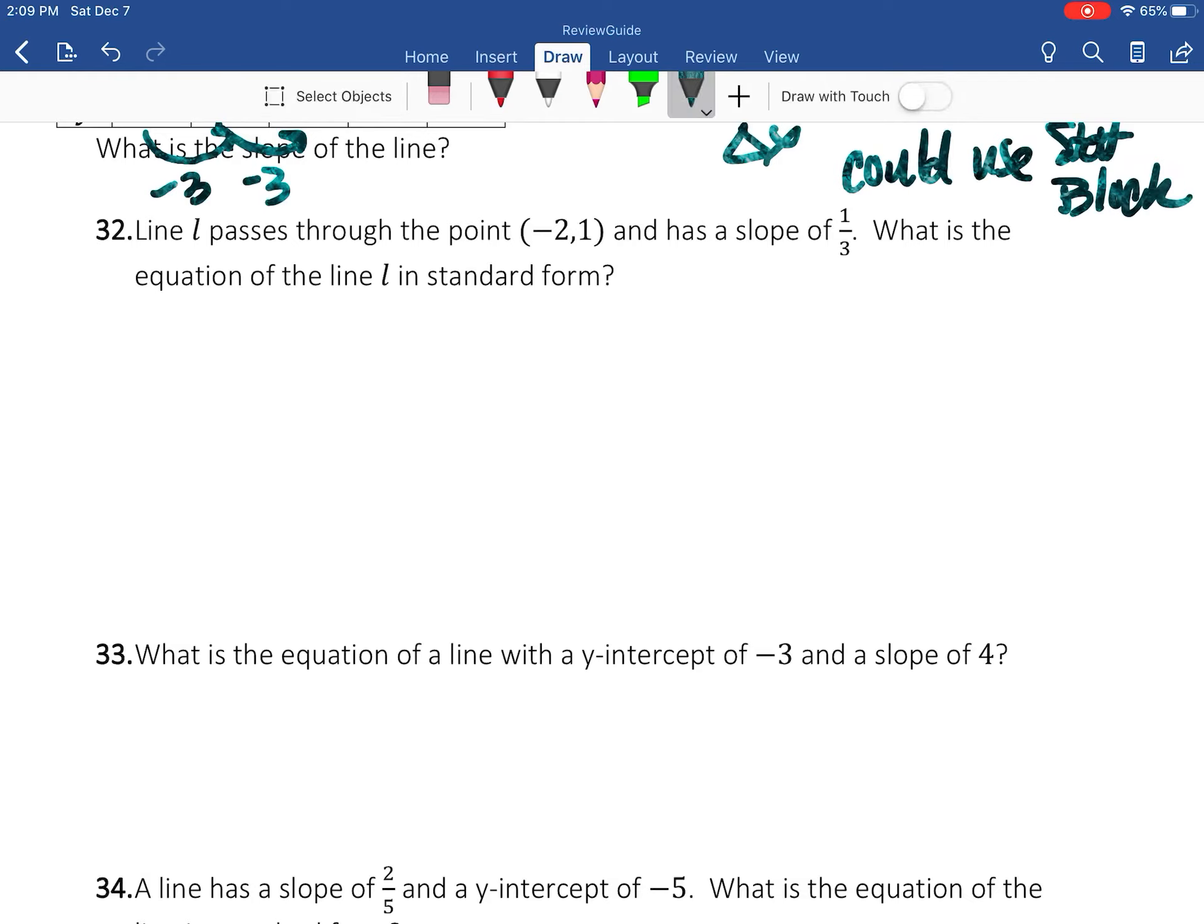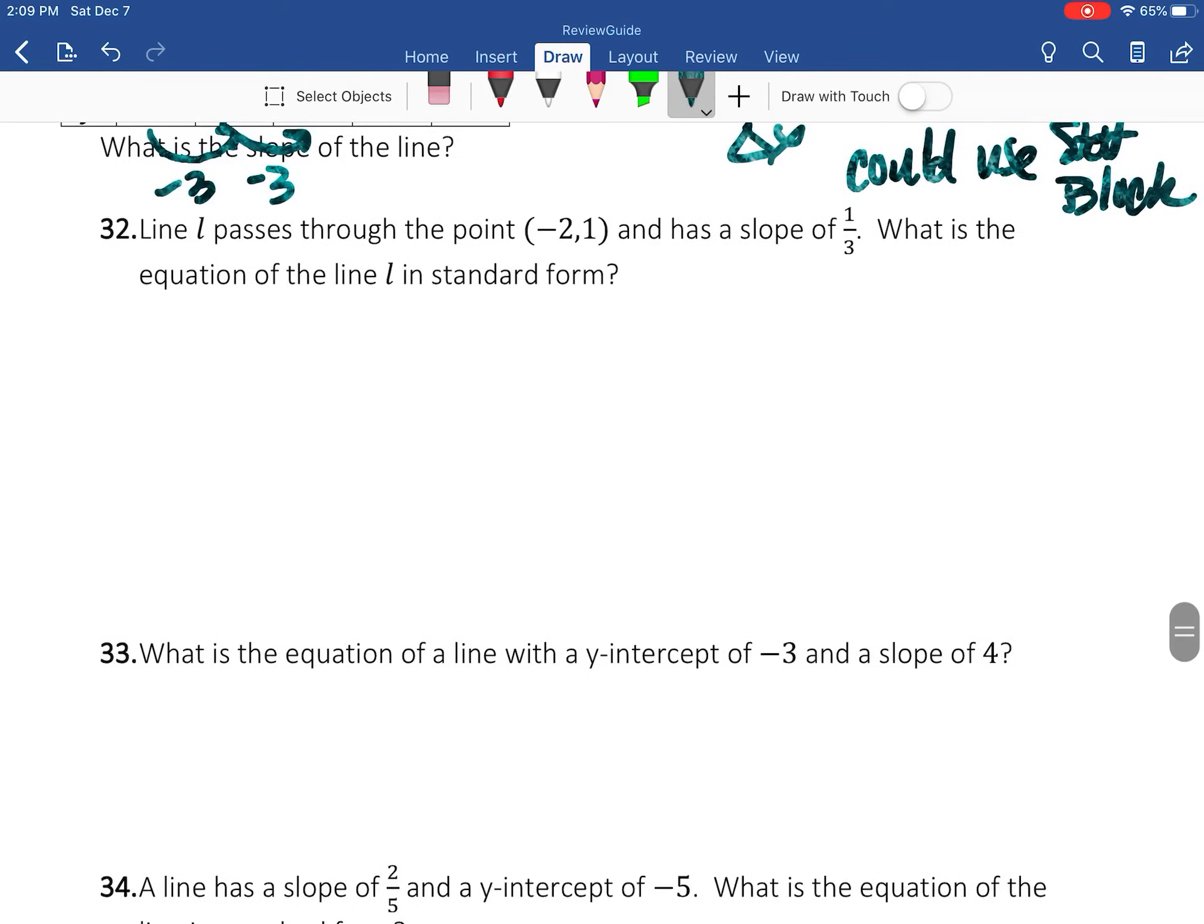This is not my y-intercept, so I need to make sure that I have a point and a slope. So I need to use point-slope form. Now it needs to be in standard form finally, so Ax + By = C. But first I'm going to use point-slope form, so that's going to give me the equation.